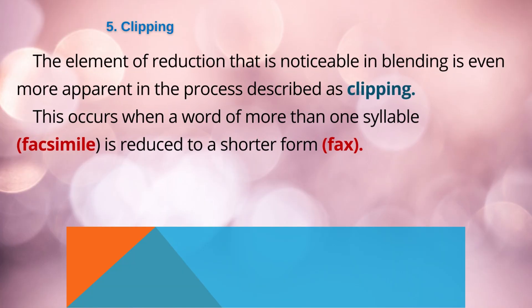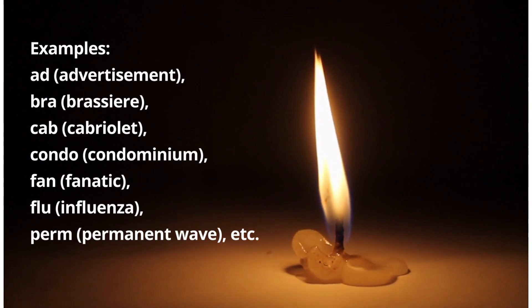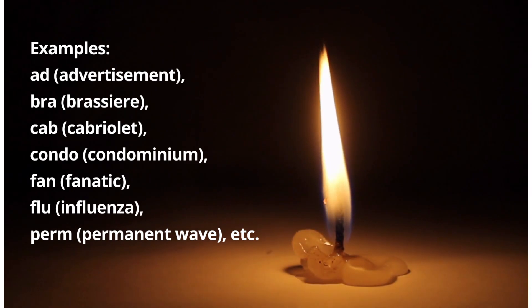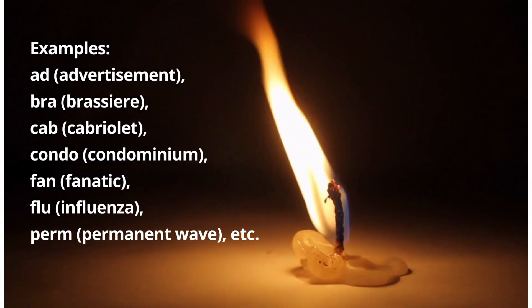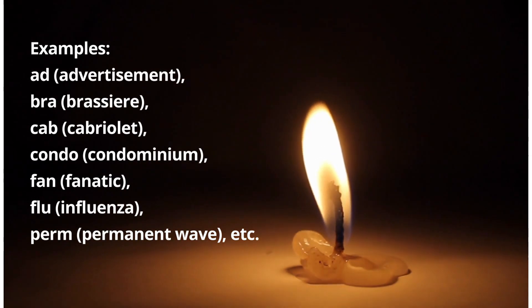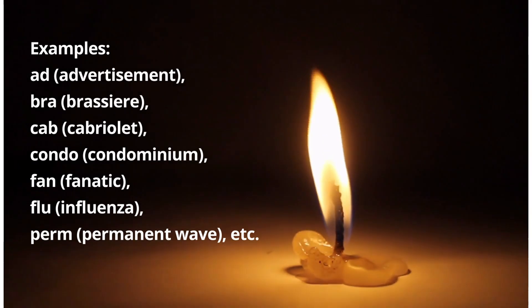Clipping. The element of reduction noticeable in blending is even more apparent in the process described as clipping. This occurs when a word of more than one syllable — for example, facsimile — is reduced to a shorter term, fax. More examples: ad, for advertisement; bra, for brassiere; cab, for cabriolet; condo, for condominium; fan, for fanatic; flu, for influenza.